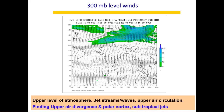The 300 mb upper level is where jet streams, Rossby waves, and upper air circulations (UAC) are seen. Upper air divergence at 300 mb means high pressure at the upper level, which implies low pressure and convergence at the lower levels, supporting precipitation. Conversely, upper air convergence at 300 mb means low pressure at upper levels and high pressure below — a sunny day. The 500 and 300 mb levels should be looked at together.